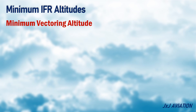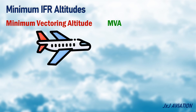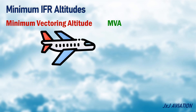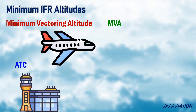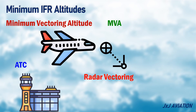Minimum Vectoring Altitude, MVA — this is the lowest altitude that may be assigned by ATC for IFR operations when radar vectoring is used. ATC ensures obstacle clearance with the help of radar surveillance.